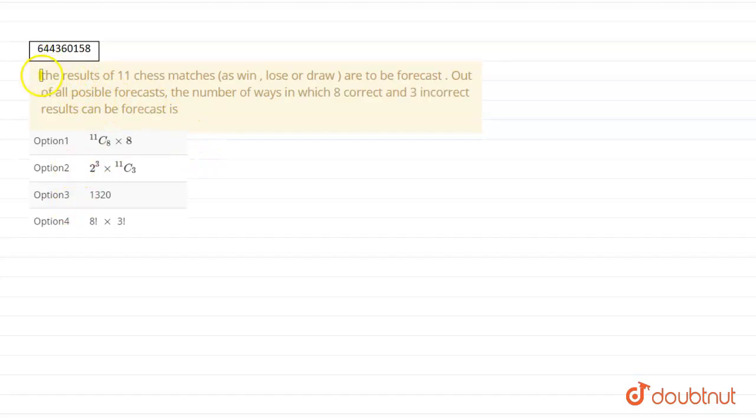Hello guys, in the question we are given that the result of 11 matches, which can be win, lose, or draw, are to be forecasted. Out of all the possible forecasts, the number of ways in which eight correct and three incorrect results can be forecast, and we are given four options. We have to choose the right options.